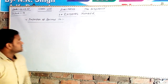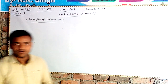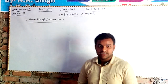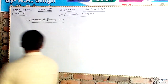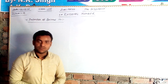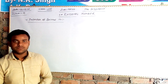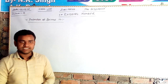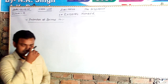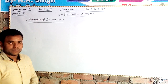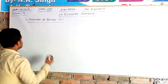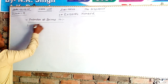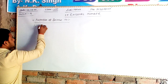Now let's see the properties of rational numbers. There are four properties: closure property, commutative property, associative property, and distributive property over addition and subtraction. We will discuss each topic line by line. The first property is closure property.